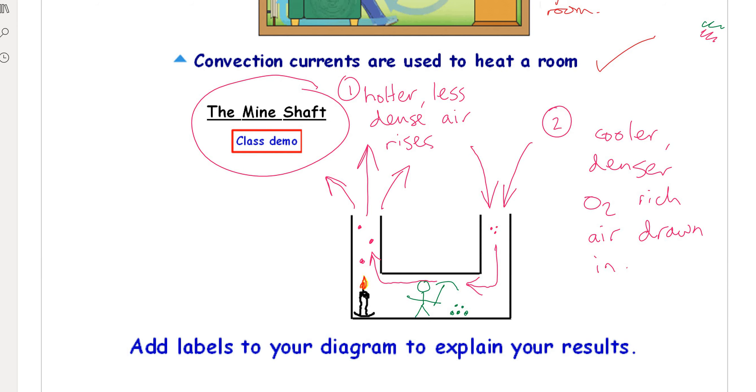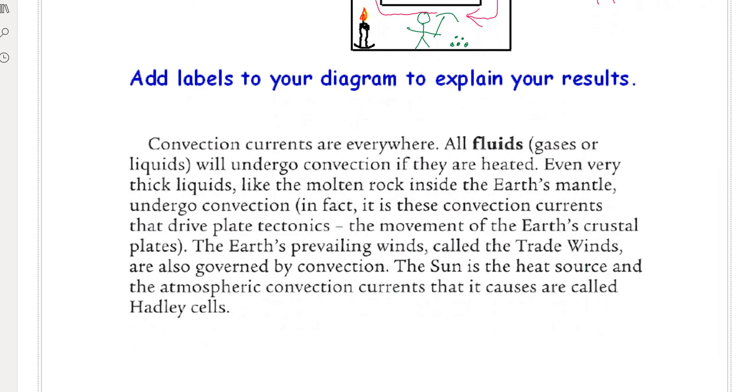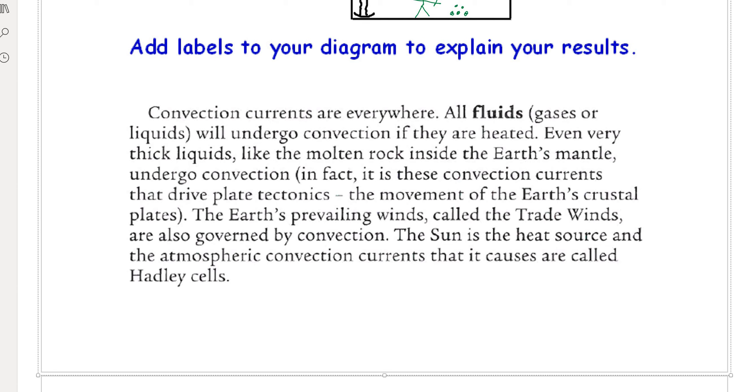Number one: hotter, less dense air rises, and cooler, denser, oxygen-rich air is drawn in. So these convection currents are everywhere.